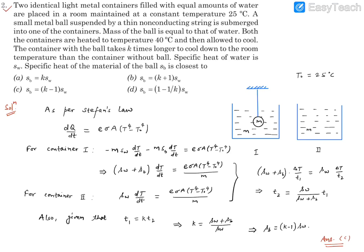Here is equation number two. Let me read what it says: Two identical light metal containers filled with equal amounts of water are placed in a room maintained at a constant temperature of 25 degrees Celsius. A small metal ball suspended by a thin non-conducting string is submerged in one of the containers.